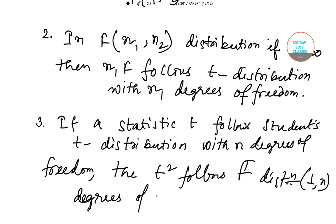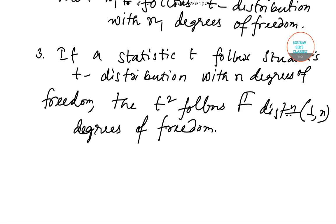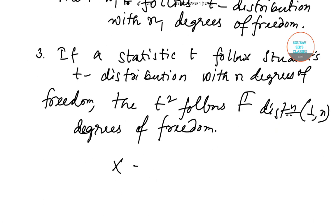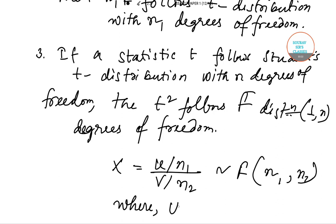We have to check which of these considerations is correct. So let's see how we approach this. We first can say X = (U/n1)/(V/n2) belongs to F with n1 and n2, where U is a chi-square distribution with n1 degrees of freedom and V is...